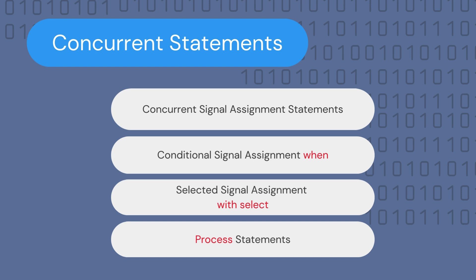There are many types of concurrent statements that can be used in VHDL to describe circuits, and they represent the tools you will use to implement digital circuits in VHDL. We will look at four main types: the concurrent signal assignment statements, the conditional signal assignment using 'when', the selected signal assignment with 'select', and the process statements — more on process statements at the end of the video.